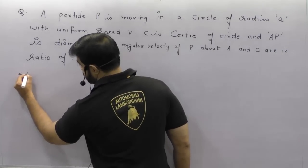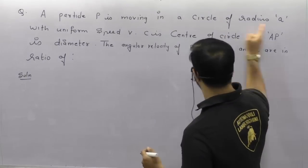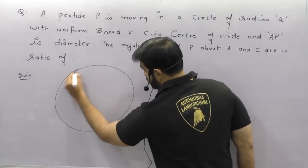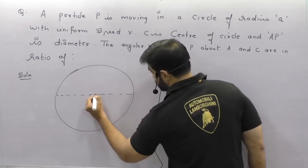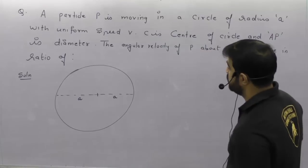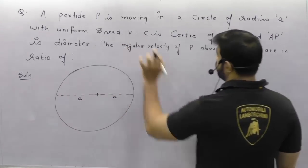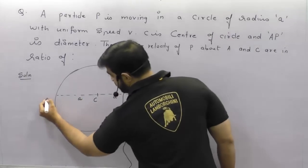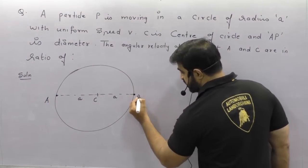Now we'll discuss the solution. They are telling you a particle P is moving in a circle of radius A, so there is a circle of radius A. This diameter is radius A, this will also be A, with uniform speed V — the speed is uniform throughout, that is speed is constant. C is the center of the circle and AP is the diameter, so A and P form the diameter.